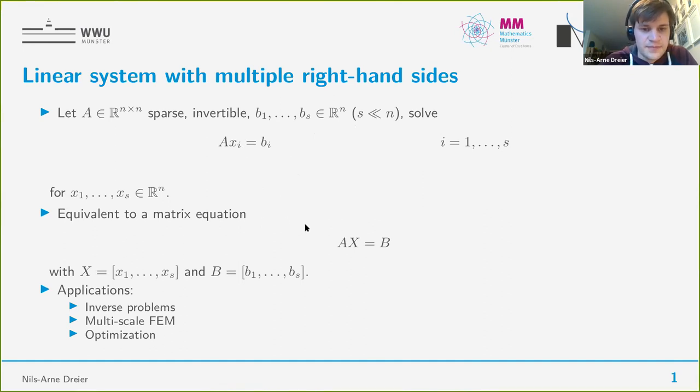We can write that into a matrix equation by putting all the Bs into a column into a tall skinny matrix and then write it just as Ax equals to B. These tall skinny matrices are also called block vectors in this talk. These problems appear in many applications like inverse problems or multi-scale finite element methods or also in optimization.